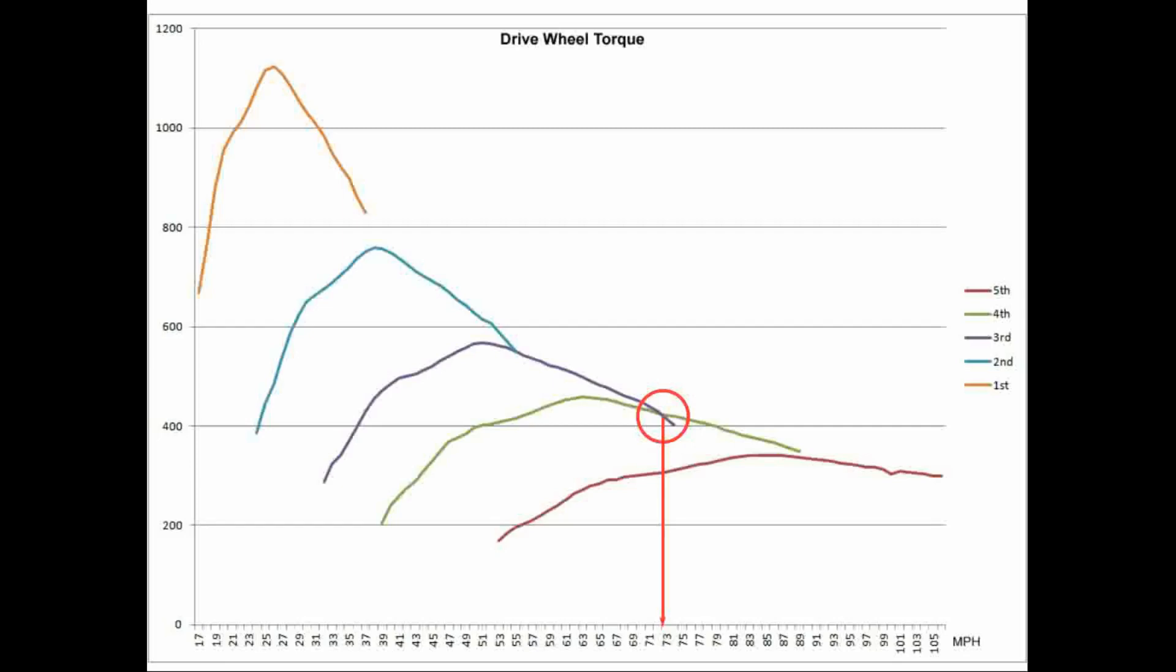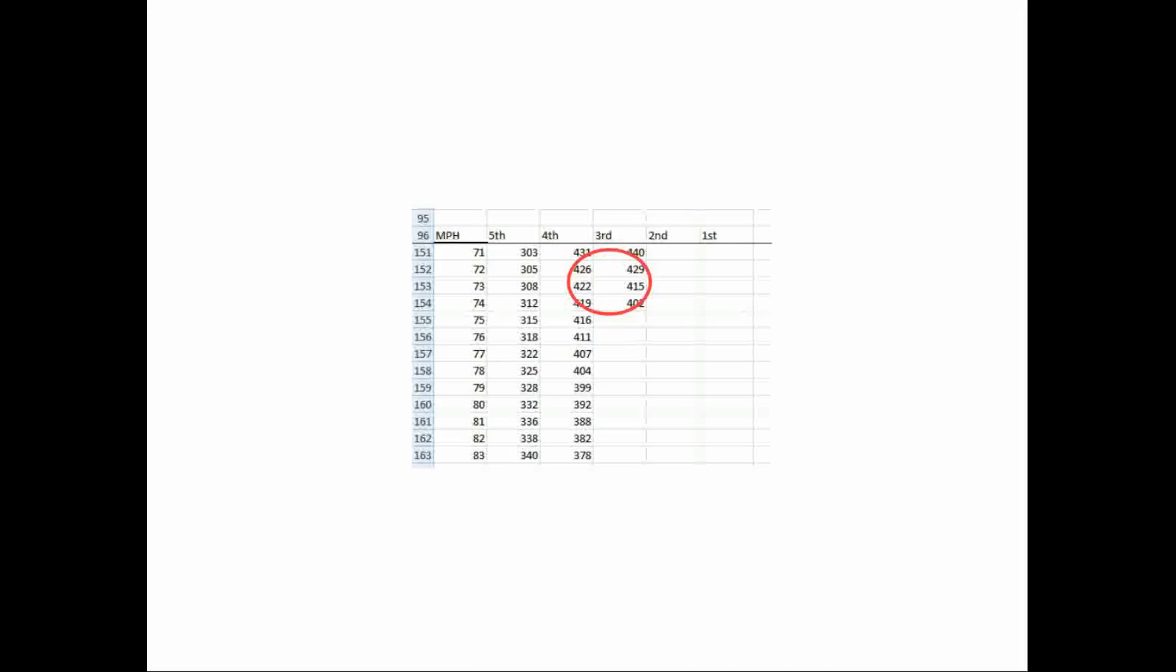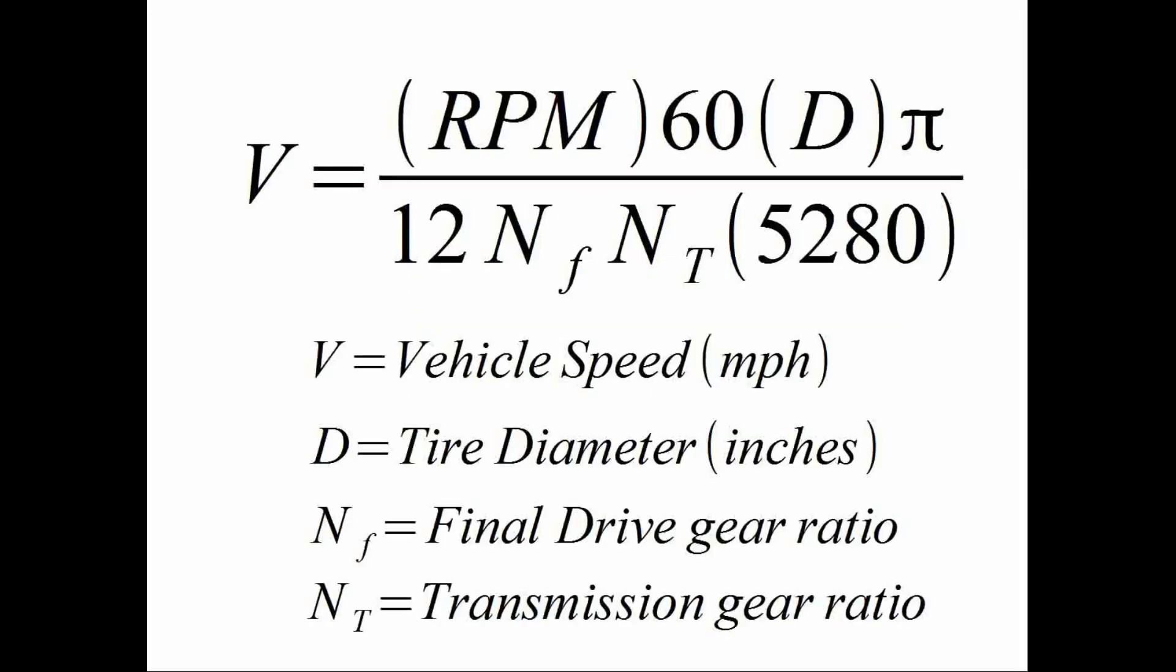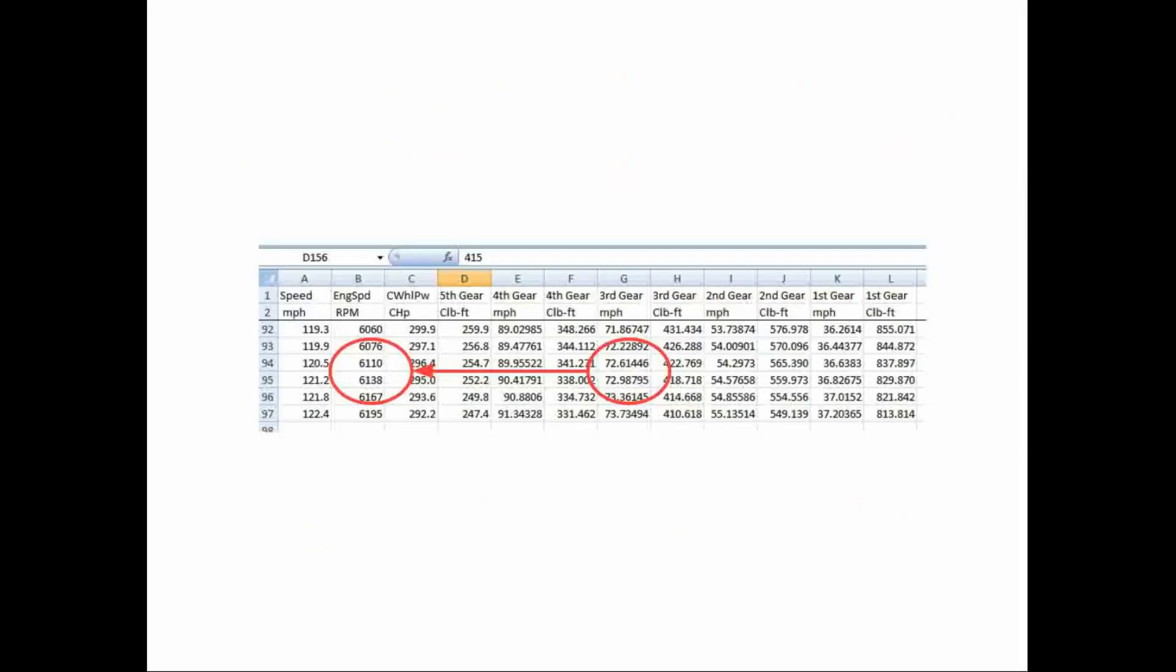Going back into the spreadsheet data, we can see exactly where third gear wheel torque falls below that of fourth gear and, from the data, it's between 72 and 73 miles an hour. From that, we can back calculate the exact engine RPM from our equation or just look back in our spreadsheet and see what engine RPM corresponds to about 72 and a half mile an hour in third gear. And, the winner looks to be 6,125 RPM.